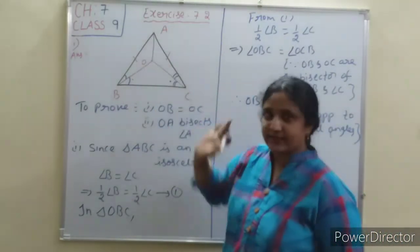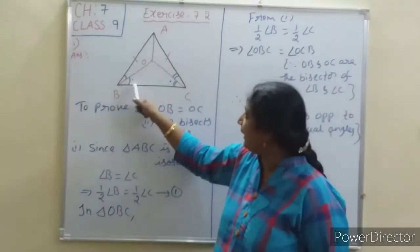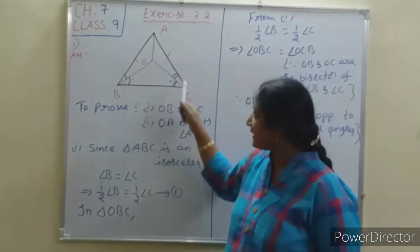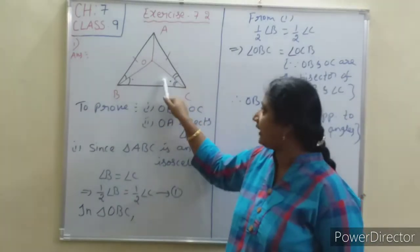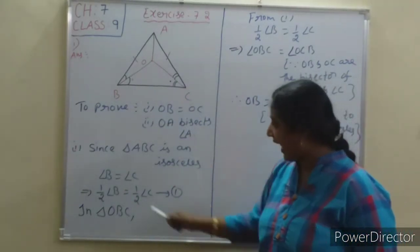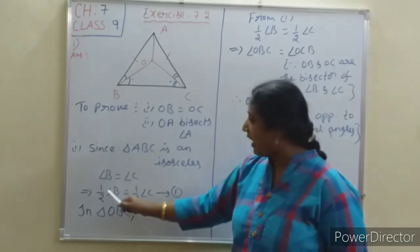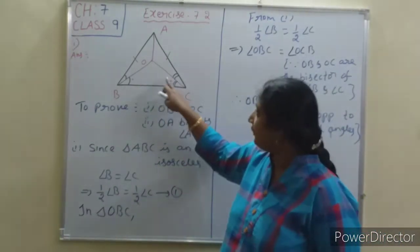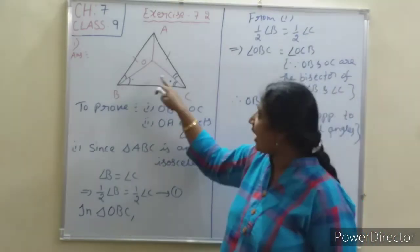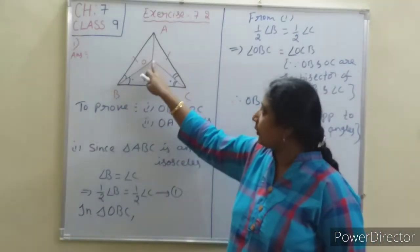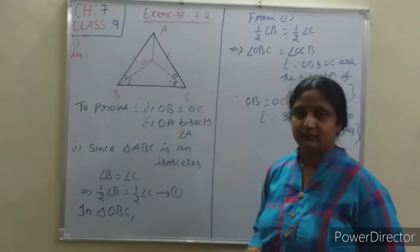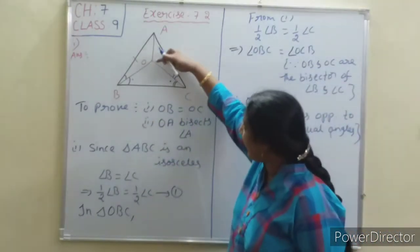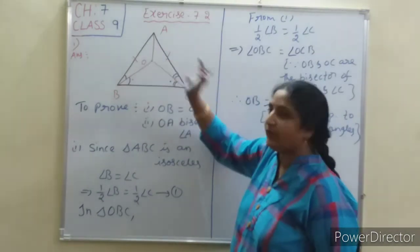To summarize: ABC is an isosceles triangle, so angle B equals angle C. Since OB and OC are bisectors, half of angle B equals half of angle C. Therefore, in triangle OBC, OB equals OC. Now for the second part: we have to prove OA bisects angle A.